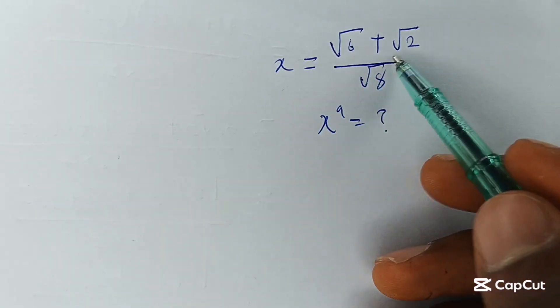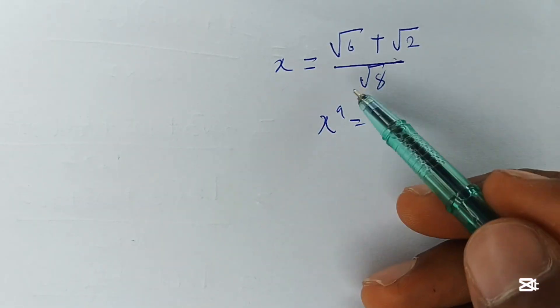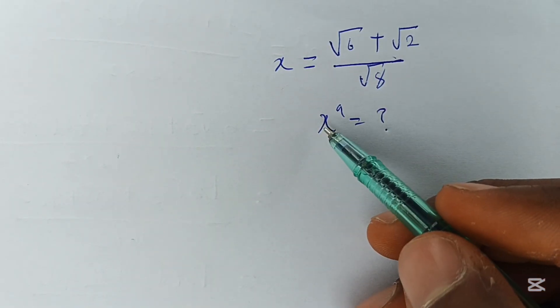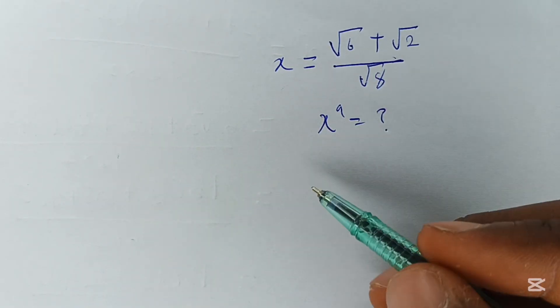x is equal to the square root of 6 plus square root of 2 over square root of 8. We are required to find x raised to the power of 9.